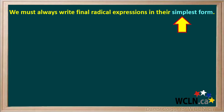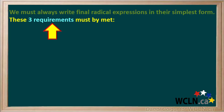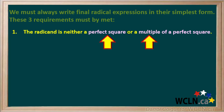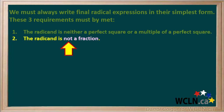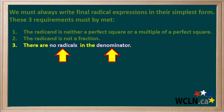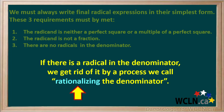When dividing radicals, we must always write final radical expressions in their simplest form. Three requirements must be met: first, the radicand is neither a perfect square nor a multiple of a perfect square — in both cases it can be further simplified. Second, the radicand cannot be a fraction. Third, there can be no radicals in the denominator. If there is a radical in the denominator, we get rid of it by a process called rationalizing the denominator.